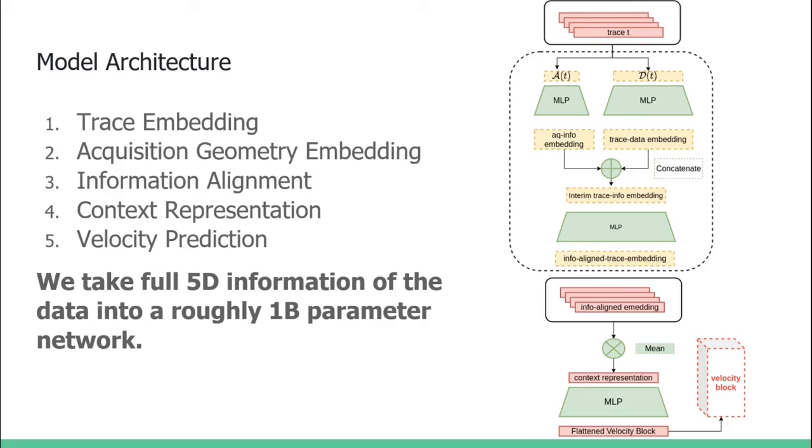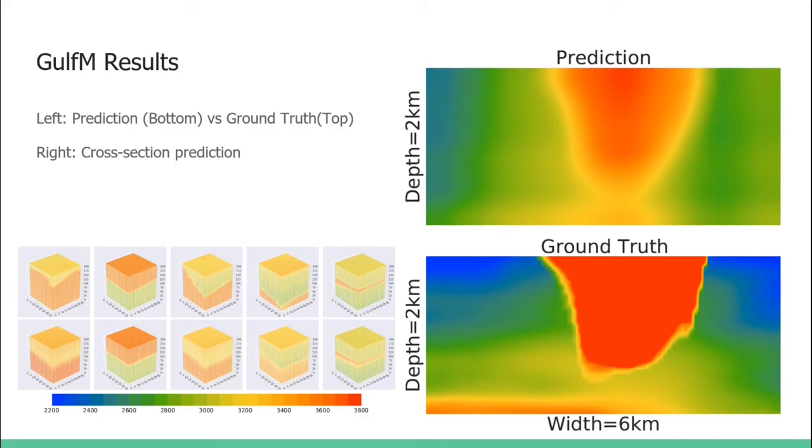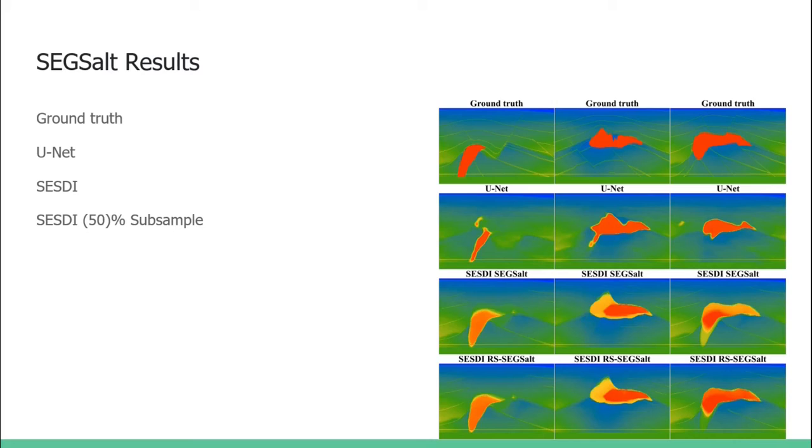Here are the prediction results for small velocity cubes. We also provide inference results in cross-section prediction. To compare SESDI with U-Net, we also introduce SEGSalt benchmark. Here we present the prediction of SESDI versus U-Net. It is shown that SESDI could better capture the salt body information.